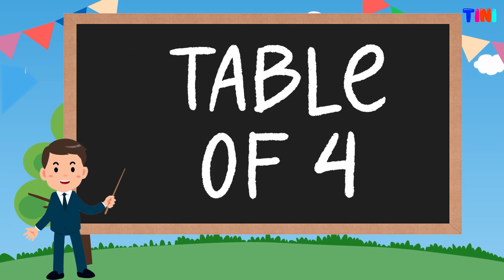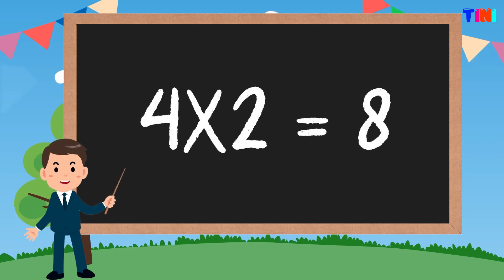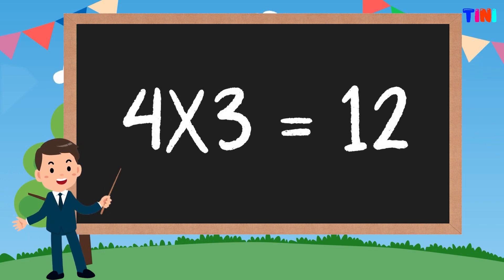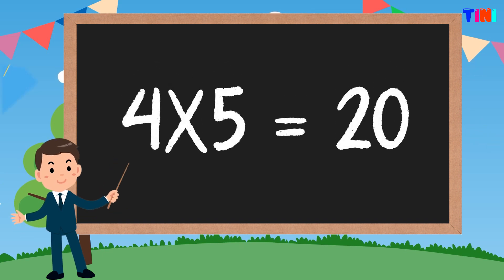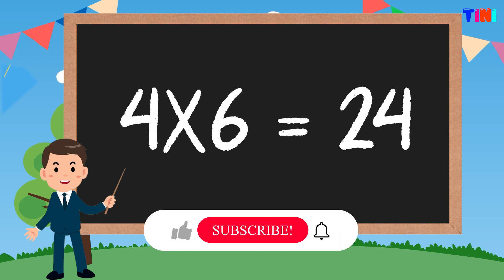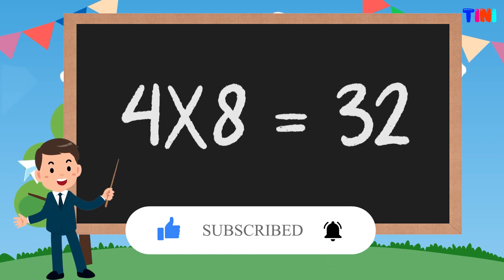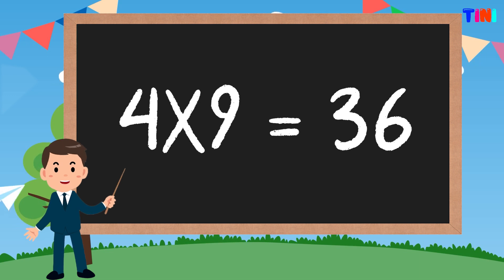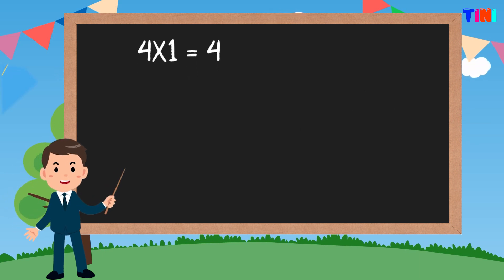Table of four. 4 ones are 4. 4 twos are 8. 4 threes are 12. 4 fours are 16. 4 fives are 20. 4 sixes are 24. 4 sevens are 28. 4 eights are 32. 4 nines are 36. 4 tens are 40.